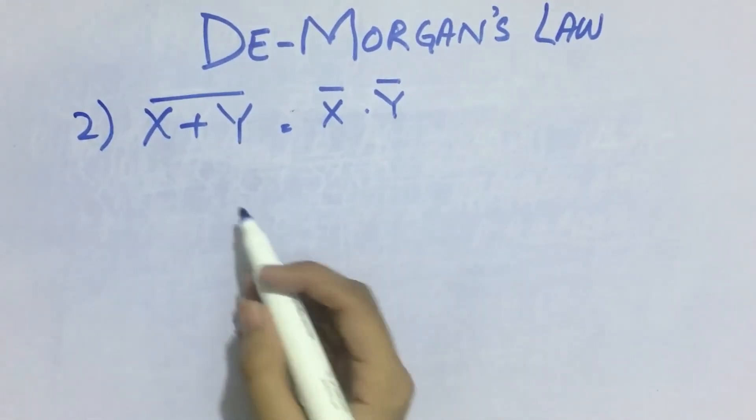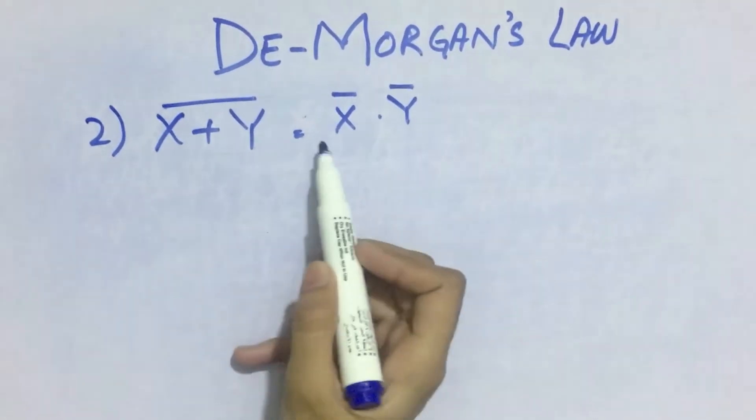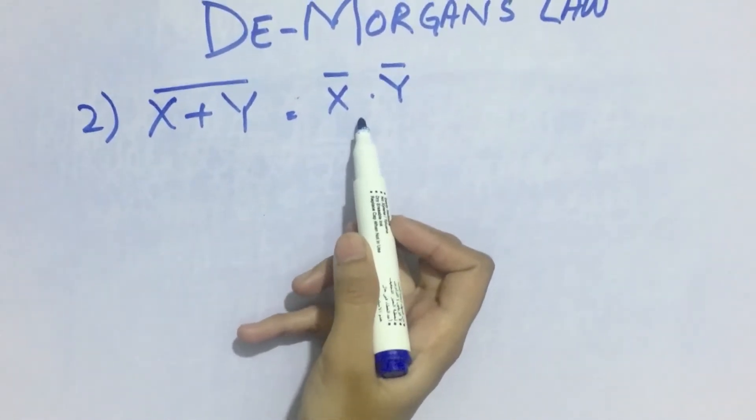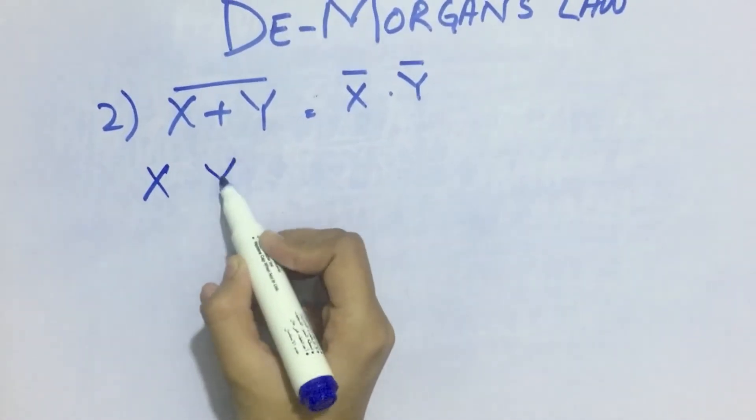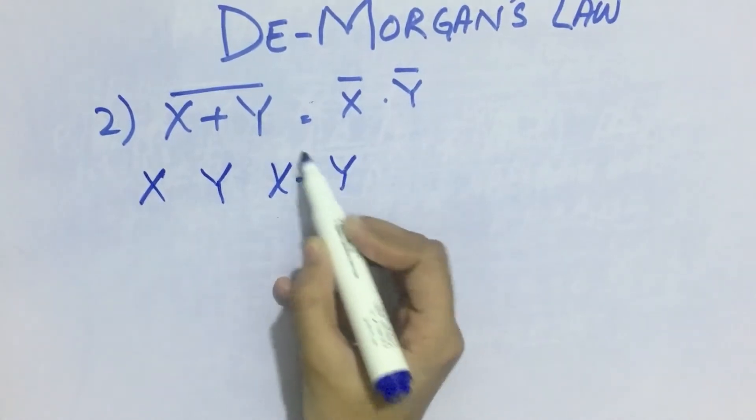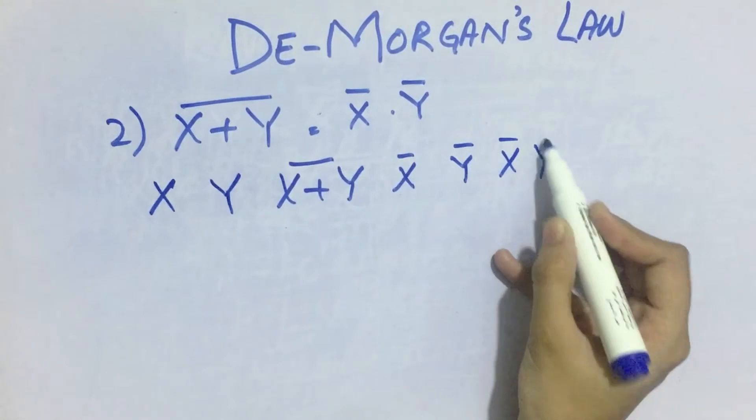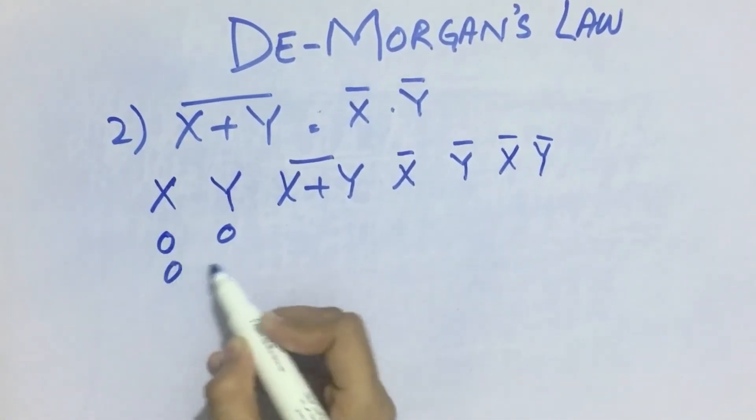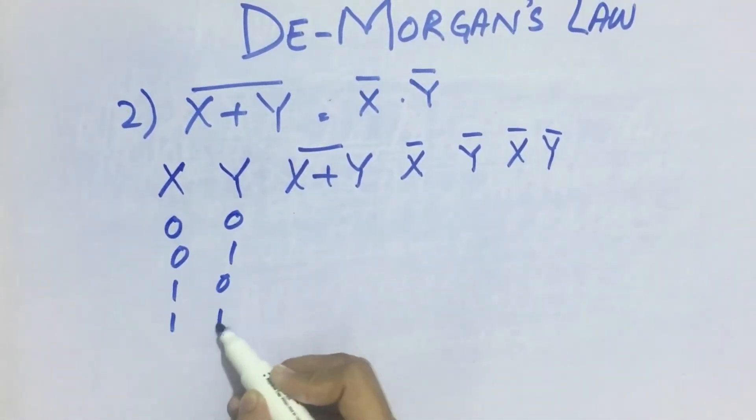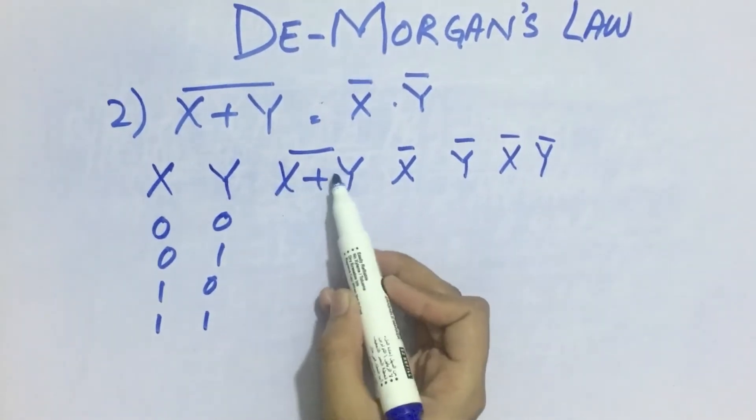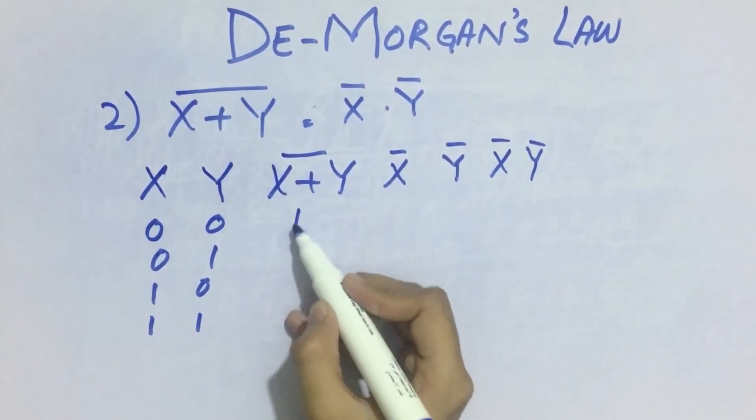Now we will prove the second law of De Morgan. x plus y whole bar equals x bar into y bar. So we will have x, y, x plus y whole bar. Then we will have x bar, y bar and the multiplication of x bar and y bar. We will have 0, 0, 0, 1, 1, 0 and 1, 1. So the addition of x and y and the bar will give 1, 0, 0, 0.